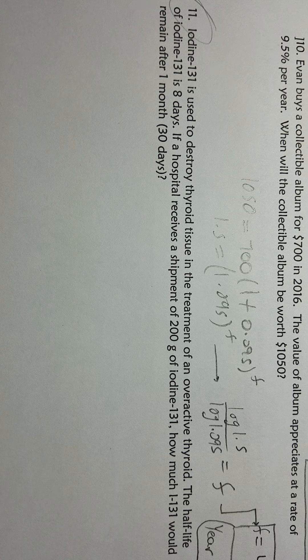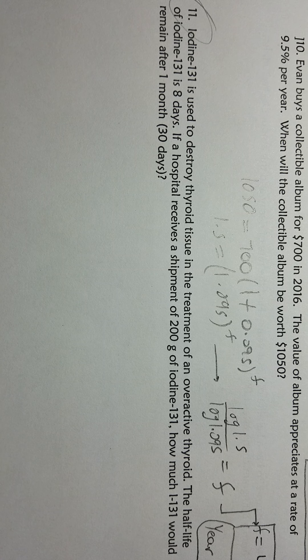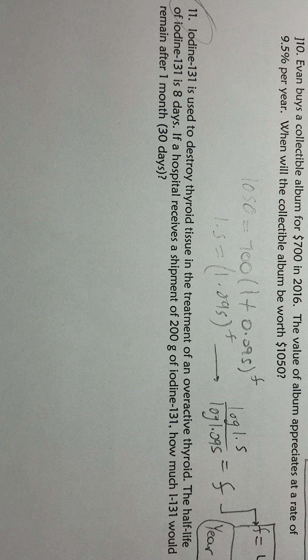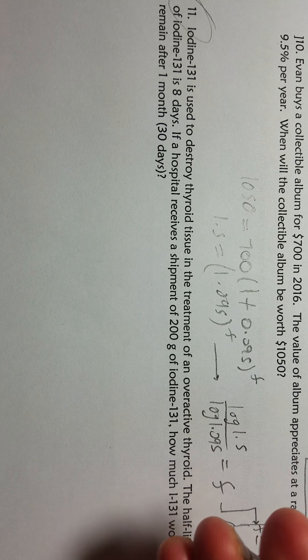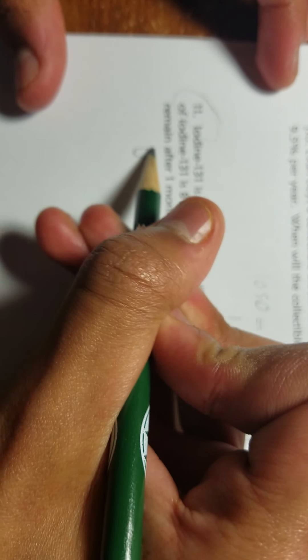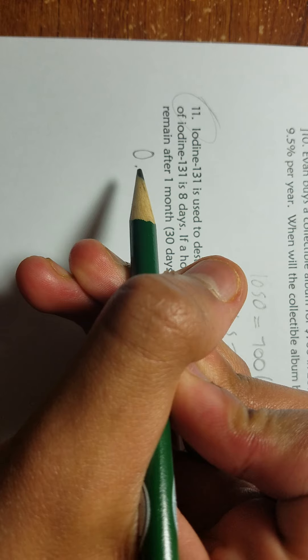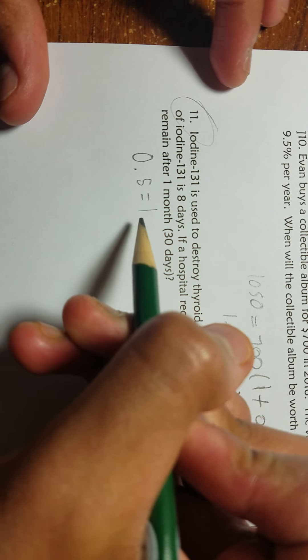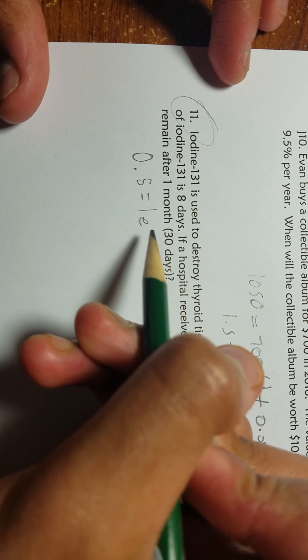The half-life of iodine-131 is eight days, so what we need to do first is find the rate. The rate is using our formula for continuous compounding. Basically what you would have to do is 0.5 is our product because 0.5 and 1 would be what we started with. Our half-life is 0.5, so that's what we're trying to find.